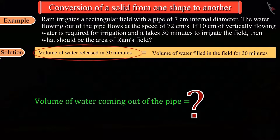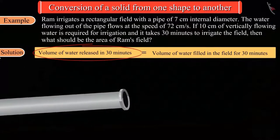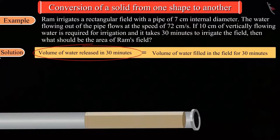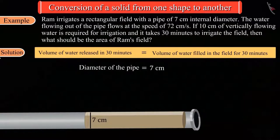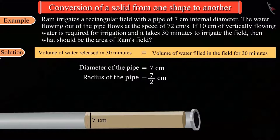We know that the pipe is shaped like a cylinder whose internal diameter is given to us, that is 7 centimeters. We can calculate the radius by dividing the diameter by 2, that is 7 divided by 2. We will also need its length to find the volume of water coming out of the pipe.